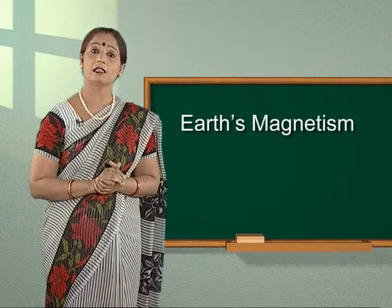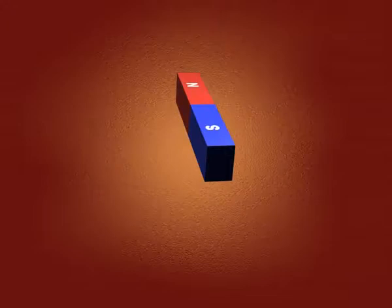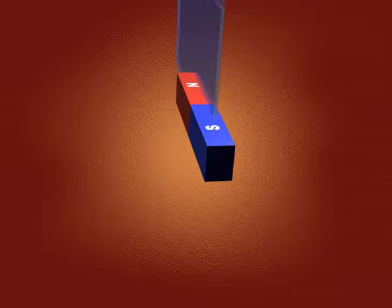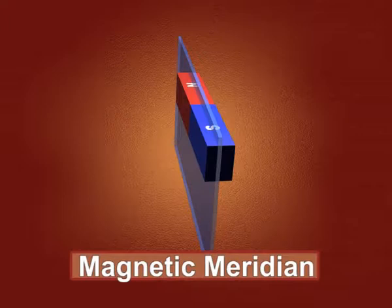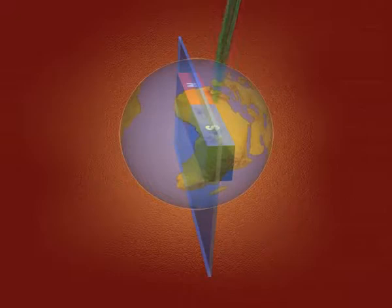Therefore, a magnetic needle free to rotate in a horizontal plane does not show true geographic north and south directions at a place. A vertical plane passing through the axis of a freely suspended magnetic needle is called the magnetic meridian. The direction of Earth's magnetic field lies in the magnetic meridian and may not be horizontal. A vertical plane passing through the geographical axis of the Earth is called the geographical meridian.